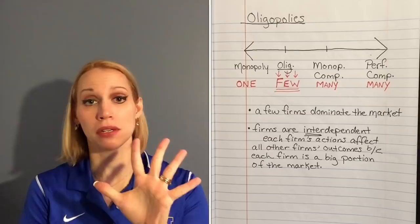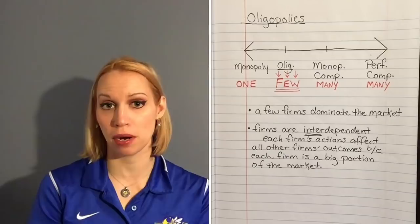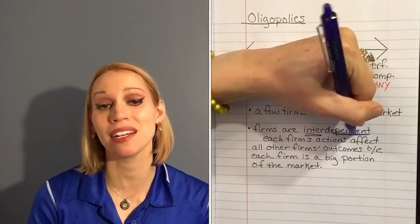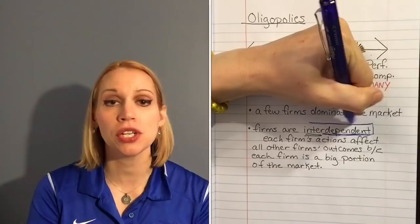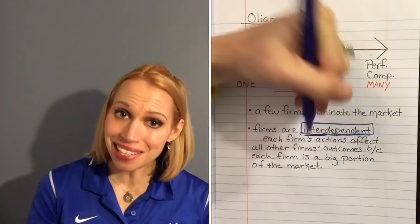Think about it — if there's only five firms dominating an industry, then each one of those five firms is 20% of the market. If they have a great advertising campaign or if they lower their price, that's taking a lot of customers away from the other four sellers. So it's really important to know that these firms are considered interdependent.